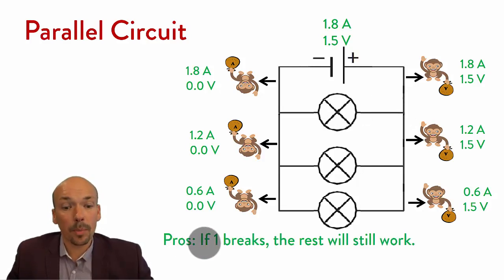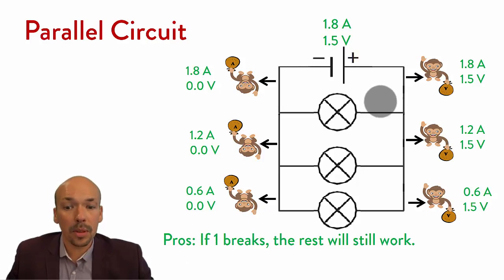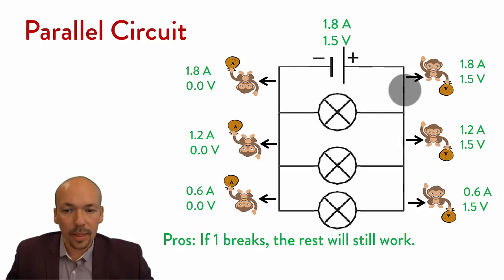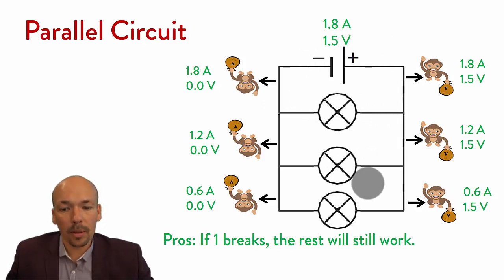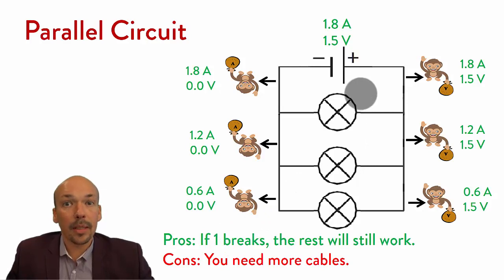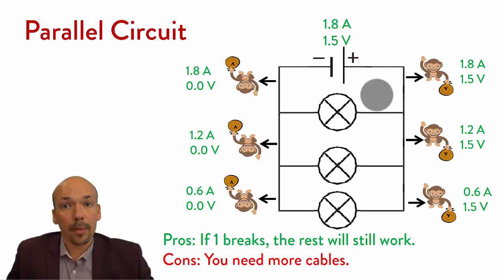There's also a positive thing about parallel: if one of these cables breaks, the rest will still work. For instance, if this cable breaks, that lamp won't work anymore, but the other two will still work. Of course, if the main cable breaks, then nothing will work. But if one branch cable or one lamp breaks, the rest still work. The negative is that you need a lot more cables to make a parallel circuit.